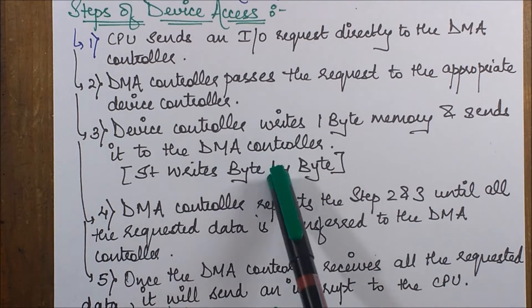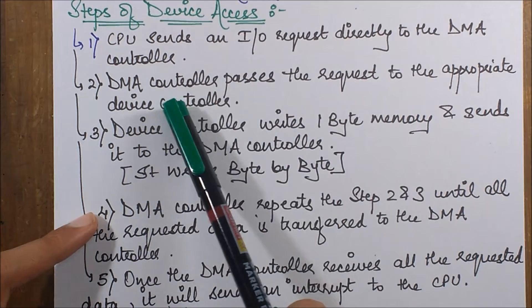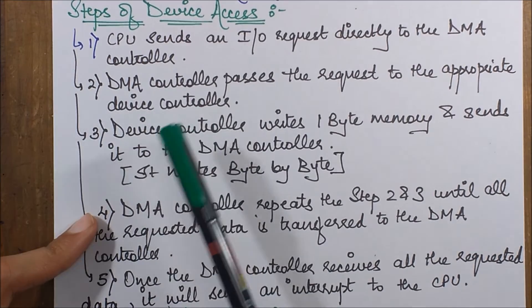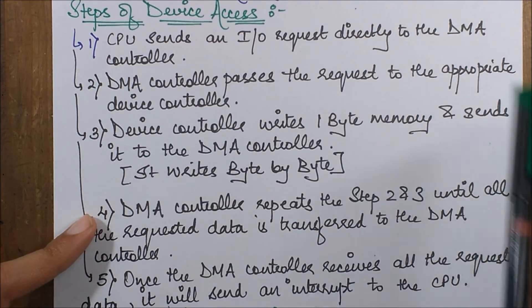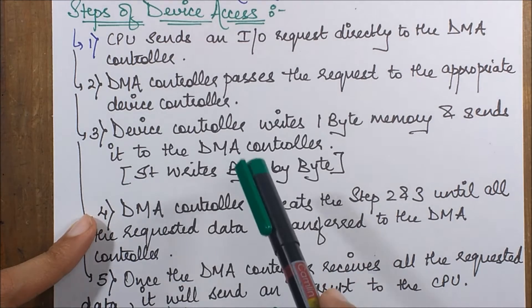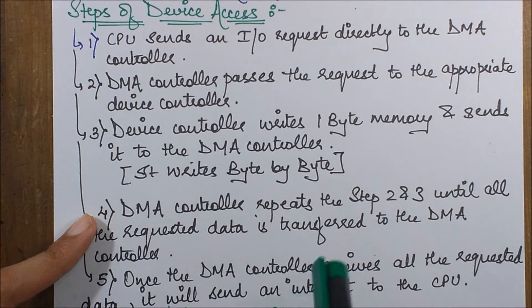Then the DMA controller repeats steps two and three. It again passes the request to the appropriate device controller which forwards the next byte. In this manner, the DMA collects the entire data.